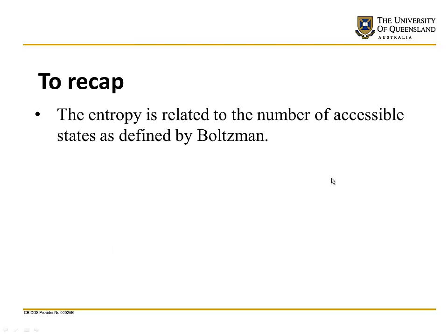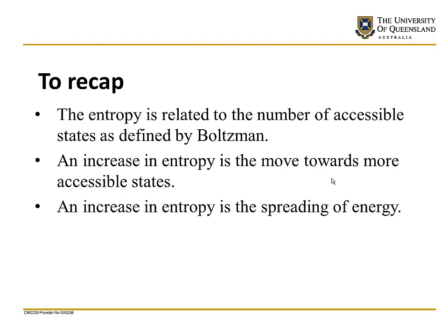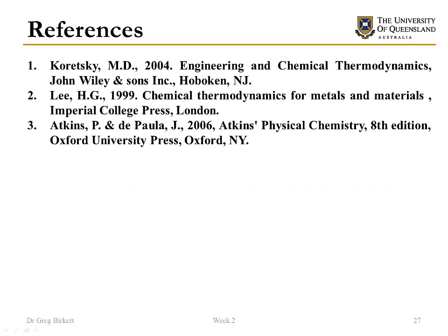To recap: entropy is related to the number of accessible states, as defined by Boltzmann. An increase in entropy is the move towards more accessible states — the spreading of energy. The best we can do is an isentropic process, which gives us either the upper or lower limits of what our process is able to do. Thanks for your time.